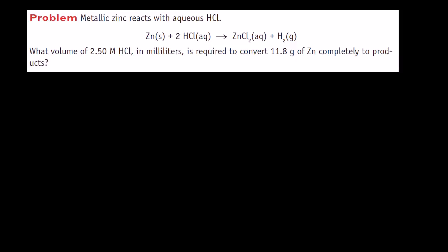Let's do another stoichiometry problem where the reaction is occurring inside of a solution. We have metallic zinc, and it reacts with aqueous hydrochloric acid. The hydrochloric acid is dissolved in water — it's an aqueous solution, the solvent is water — and it makes these products. The question asks: what volume of 2.5 molar hydrochloric acid, in milliliters, is required to convert 11.8 grams of zinc completely to products?